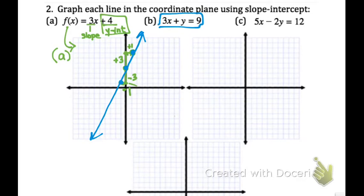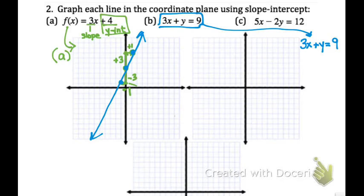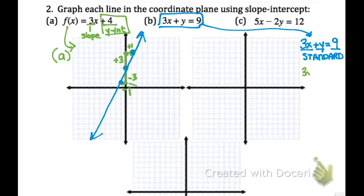In Example B: 3x plus y equals 9. This is not in slope-intercept form — it's actually what we call standard form, because we've got the x plus the y equal to 9. Standard form isn't bad, it's just not as easy to graph. So I'm going to rewrite it in slope-intercept form by subtracting 3x to get y equals negative 3x plus 9.